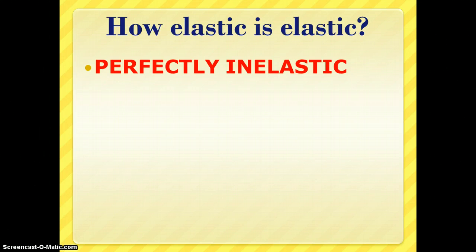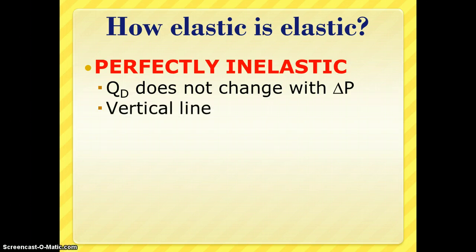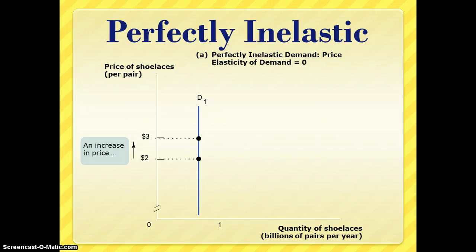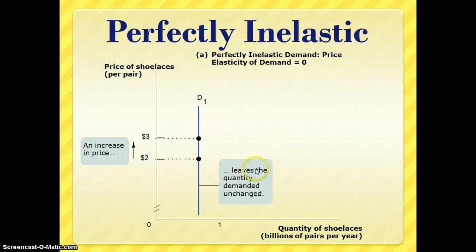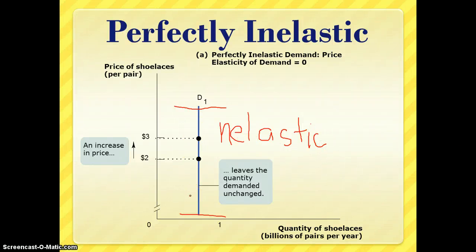We have two extremes. One is called perfectly inelastic, where quantity demanded doesn't change at all with a change in price — the numerator is zero. This is signified by a vertical demand curve. On this vertical curve, we can go from $2 to $3 and it doesn't change the amount of the good we're demanding — quantity demanded stays unchanged. A memory trick: the vertical curve looks like a capital I, and I stands for inelastic. So a vertical demand curve is considered perfectly inelastic.